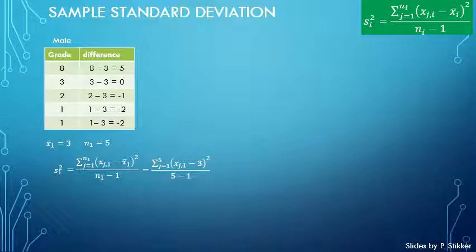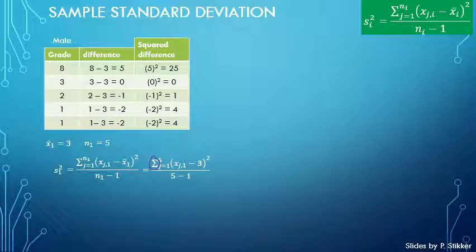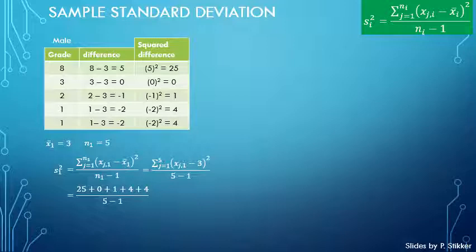Next, we square each of those difference results as shown in the formula. For example, 5 squared gives 25, and minus 1 entirely squared gives plus 1, so there are no negatives. The sum sign means we add all of those squared values: 25 plus 0 plus 1 plus 4 plus 4, still divided by 5 minus 1. That gives 34 over 4, which equals 8.5.